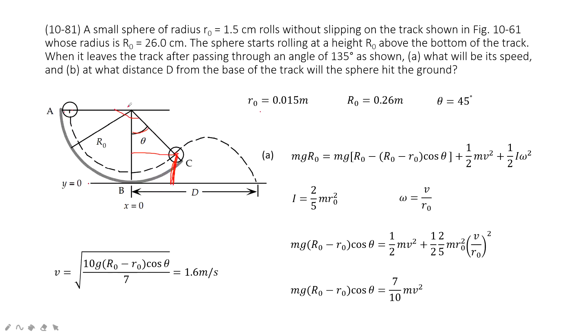And so it must be R₀, this length minus this part. So we can change the color. Minus this part. So how can you find the distance for this part?